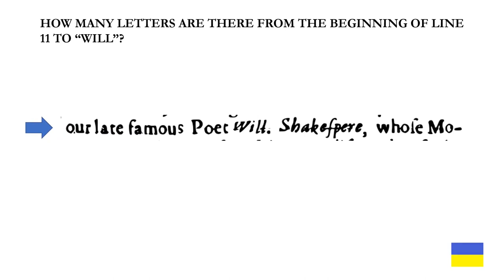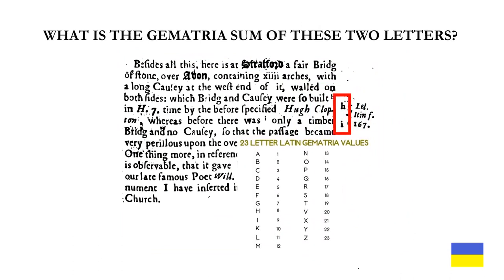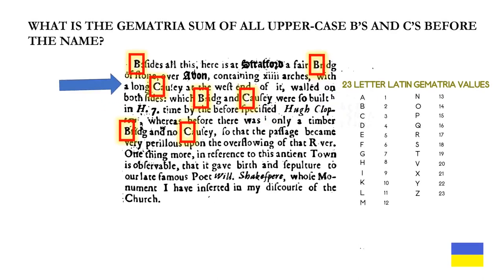How many letters are there from the beginning of line 11 to Will? How many italic letters are there in the paragraph before the first S in Shakespeare? What number is the letter? Next: what is the gematria value of the sum of these two letters along the side note — the H and the I?